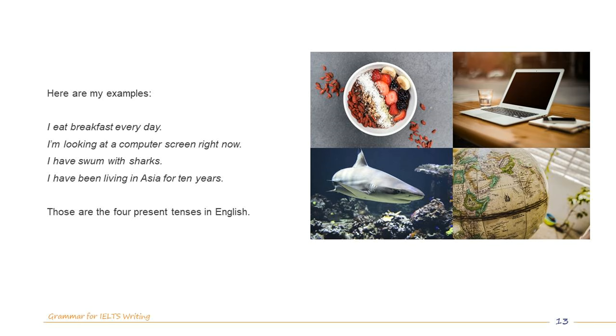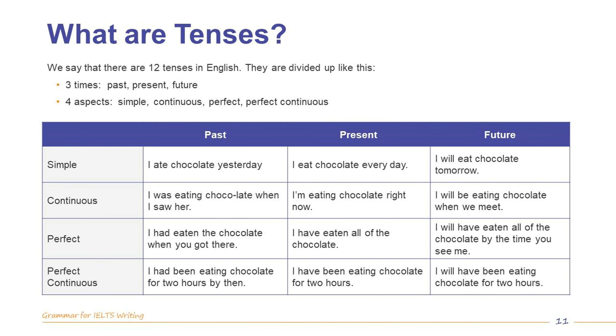We say that there are 12 tenses in English. They're divided up like this: three times—past, present, and future—and four aspects: simple, continuous, perfect, and perfect continuous.